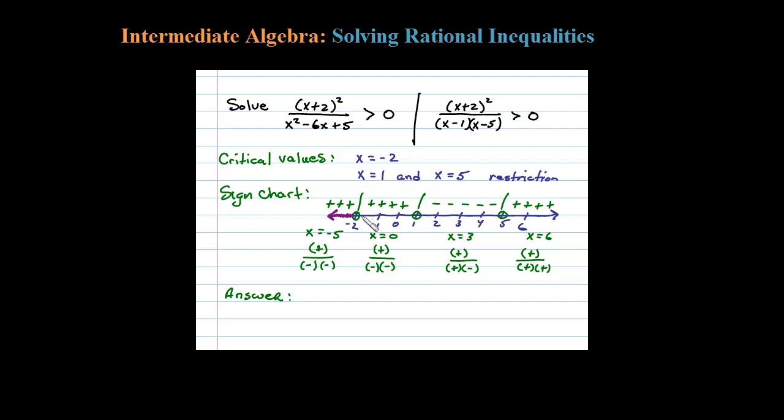going to be positive for these x values—these x values in between there and also these x values. So those are all my solutions graphed on a number line. Now let's translate that into interval notation. Notice